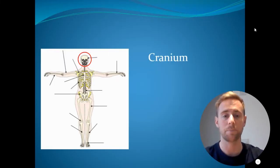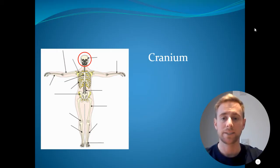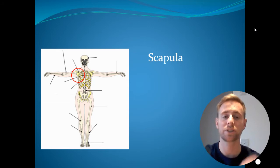The first one is the cranium, and this is the bone which protects our brain. Secondly, we have our scapula. Our scapula is located on our back and it is used for protection of our vital organs in our chest.